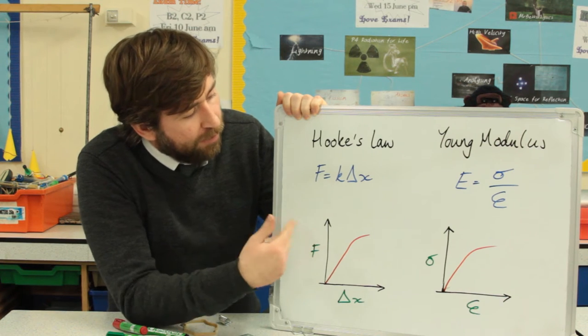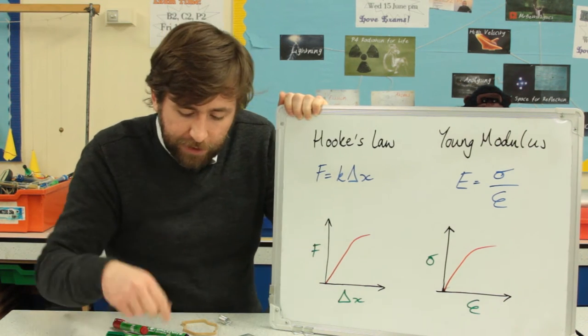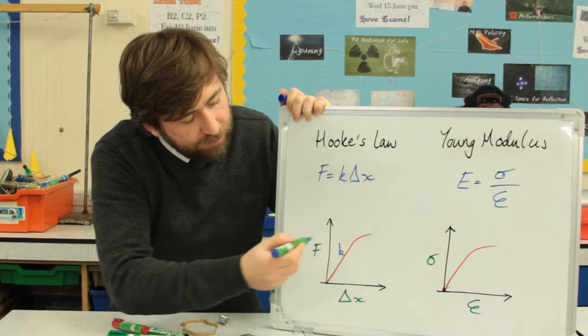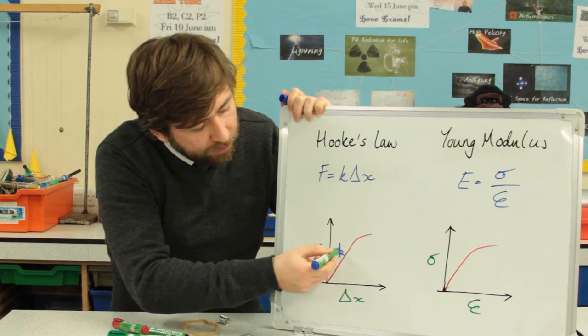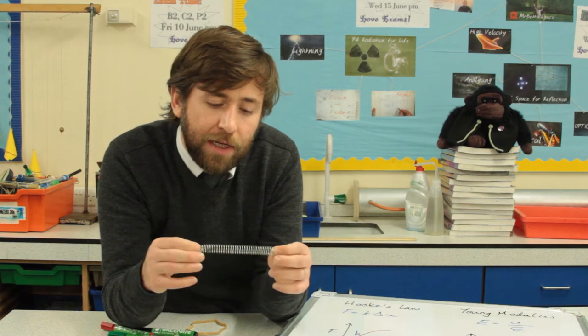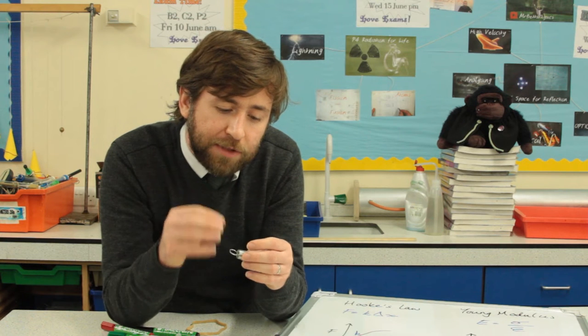Hooke's Law is pretty simple: force is proportional to extension and springs have a stiffness K, which is the gradient of the graph. So whereas Hooke's Law applies to a certain piece of the material, the Young Modulus applies to that material.